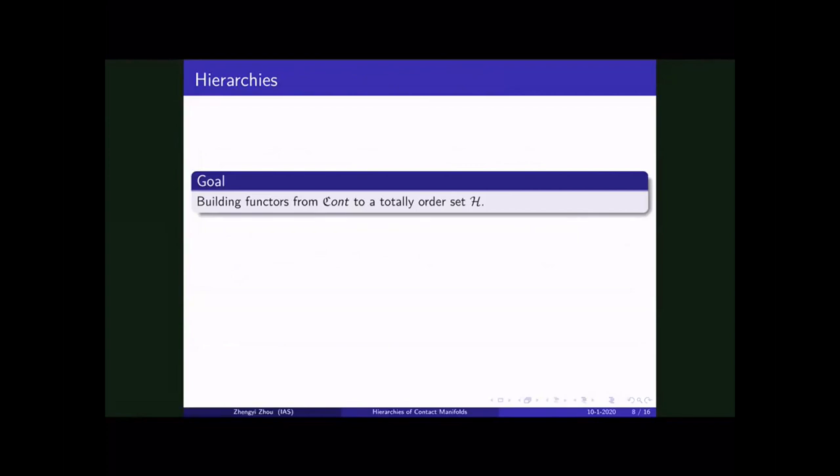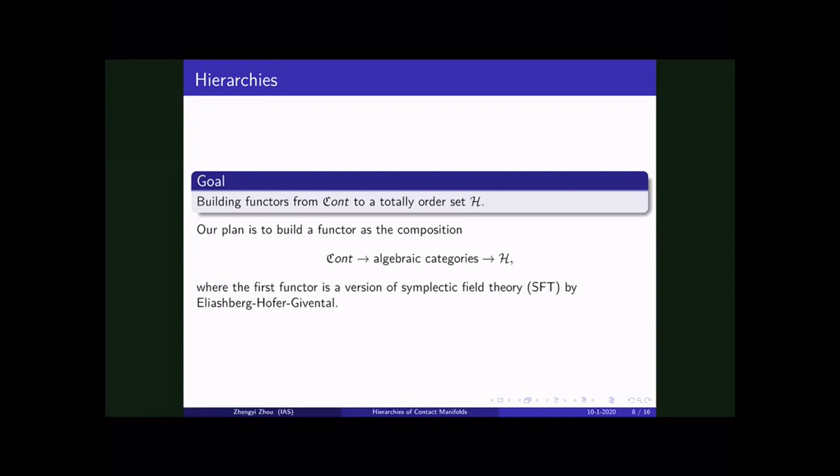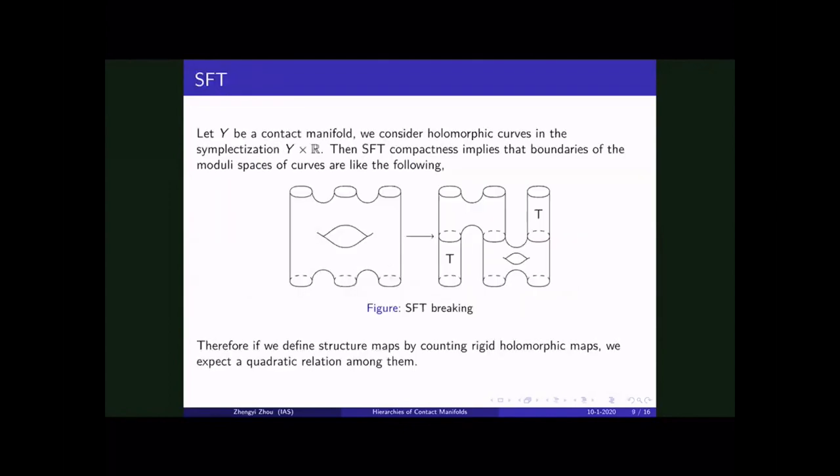Okay. So the goal is building functors from contact cobordism category to a totally ordered set H. And our plan is building functor as a composition from the contact cobordism category to some algebra categories, and then to a totally ordered set. The first functor will be a version of symplectic field theory, or SFT, introduced by Eliashberg, Hofer, and Givental in 20 years ago.